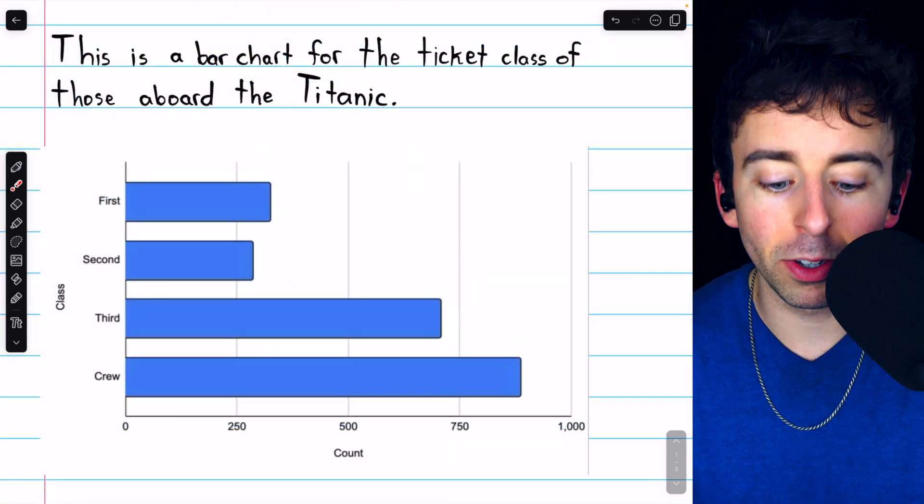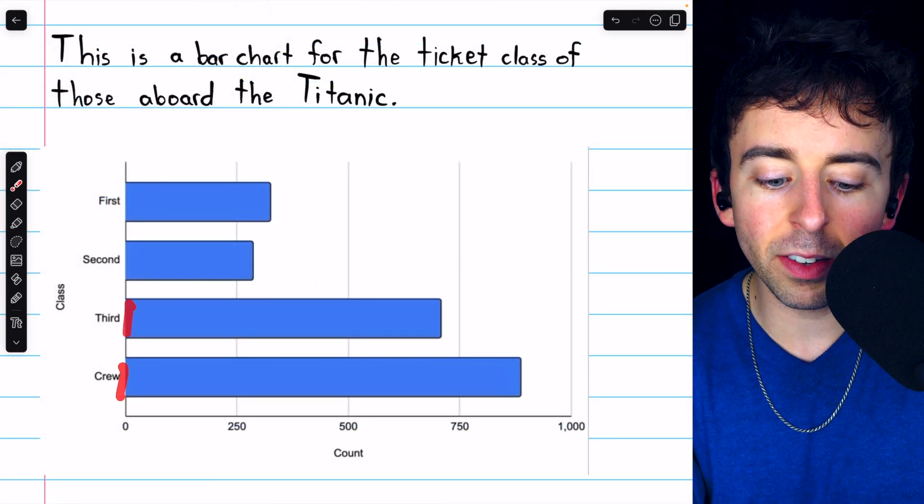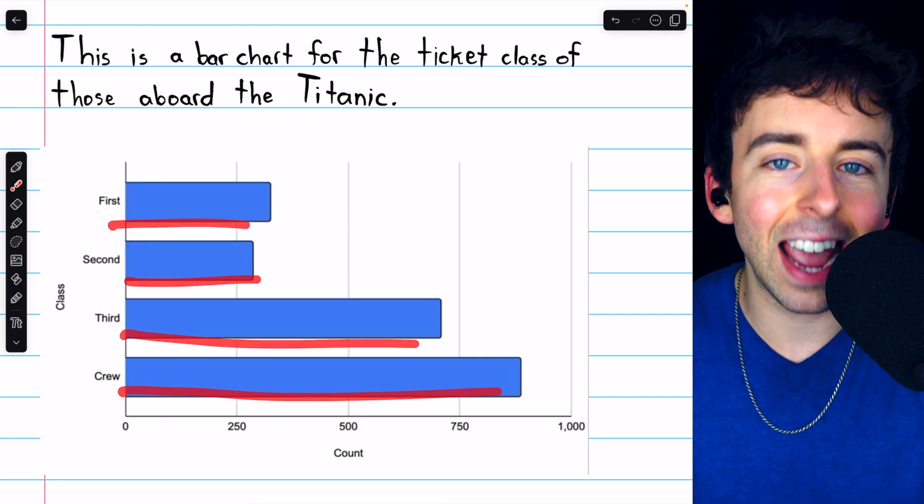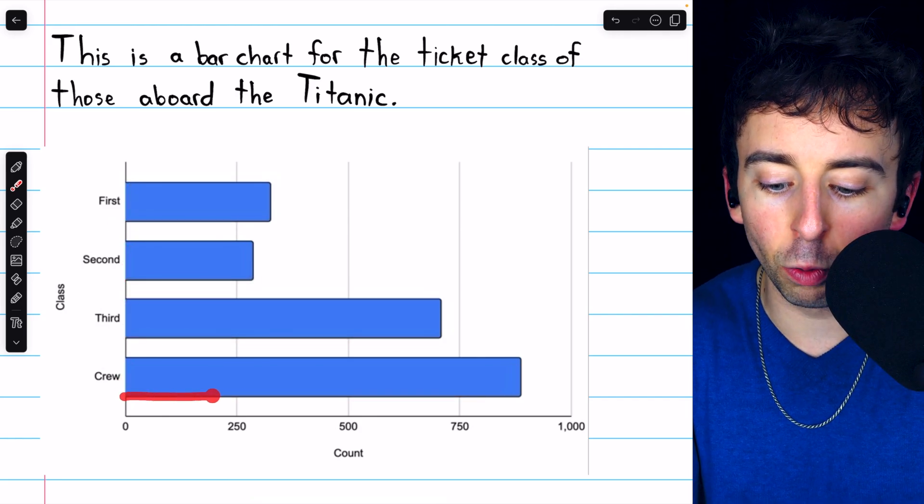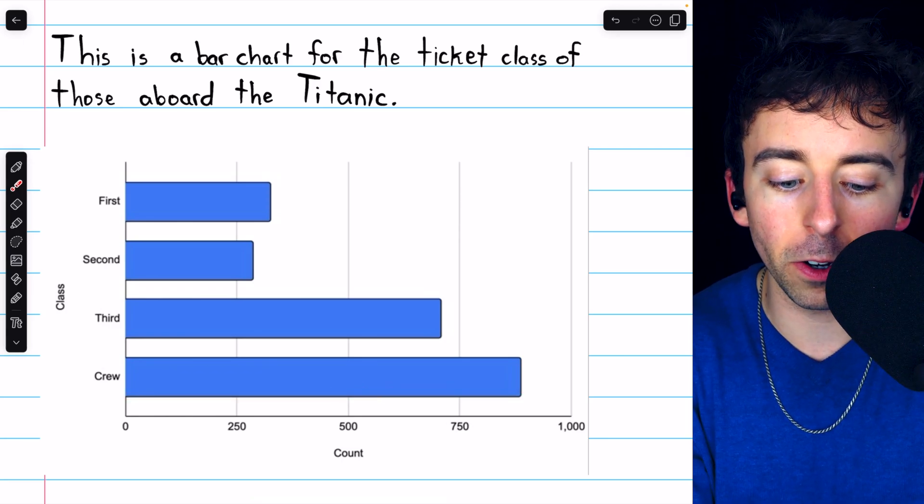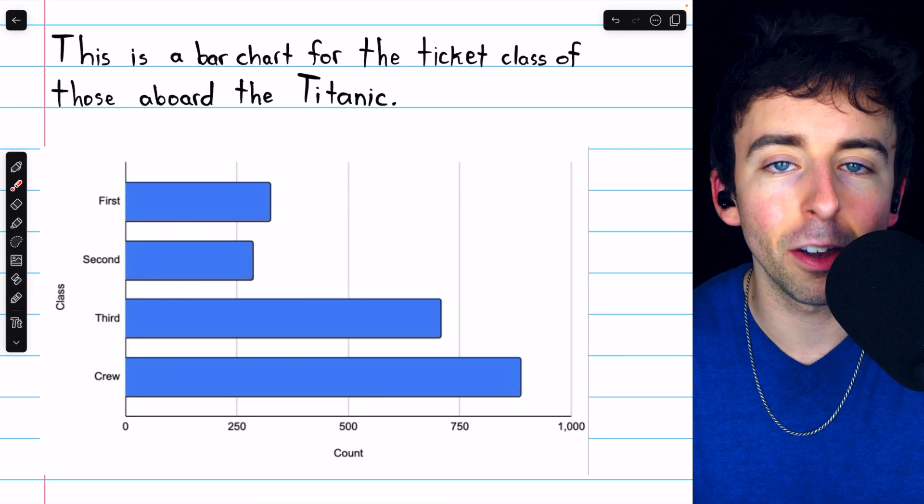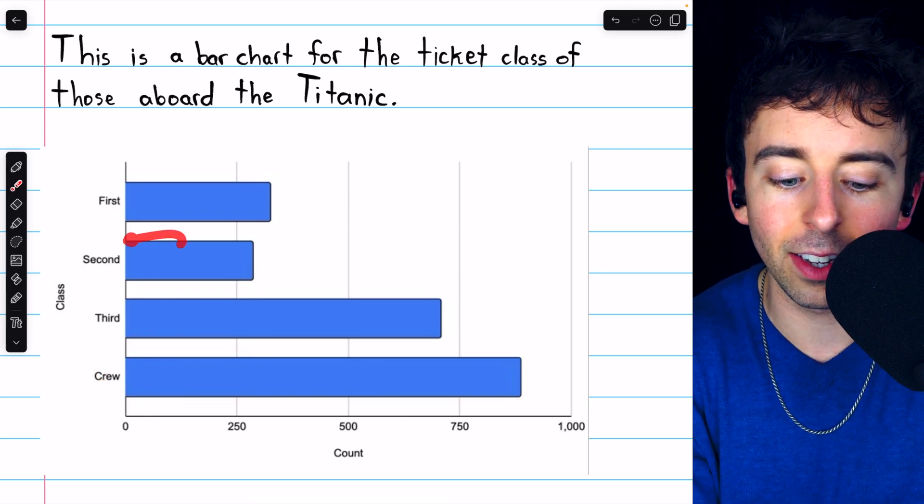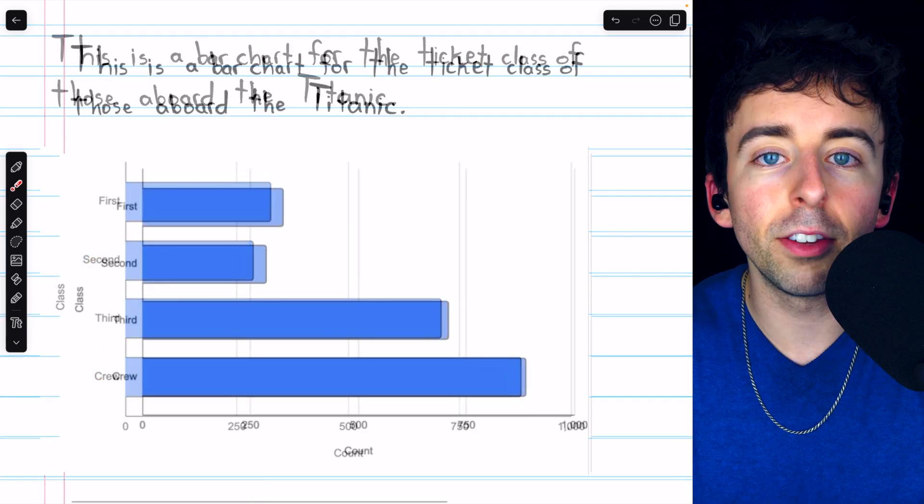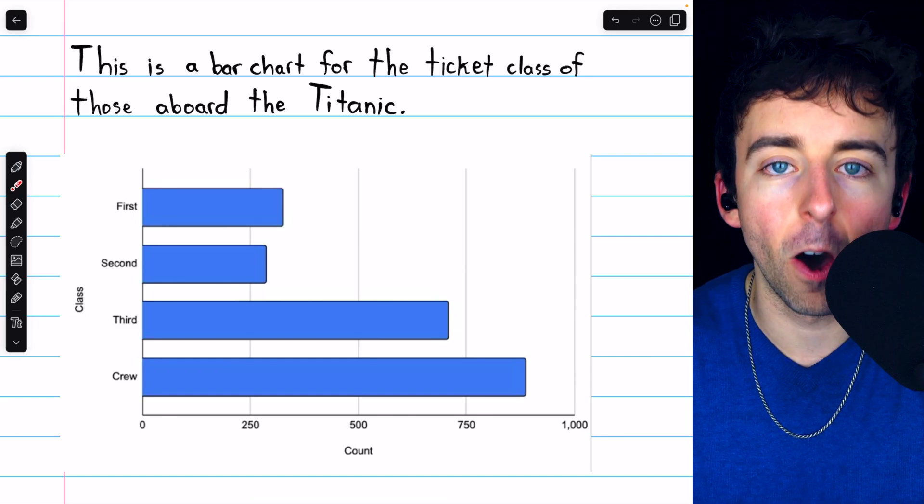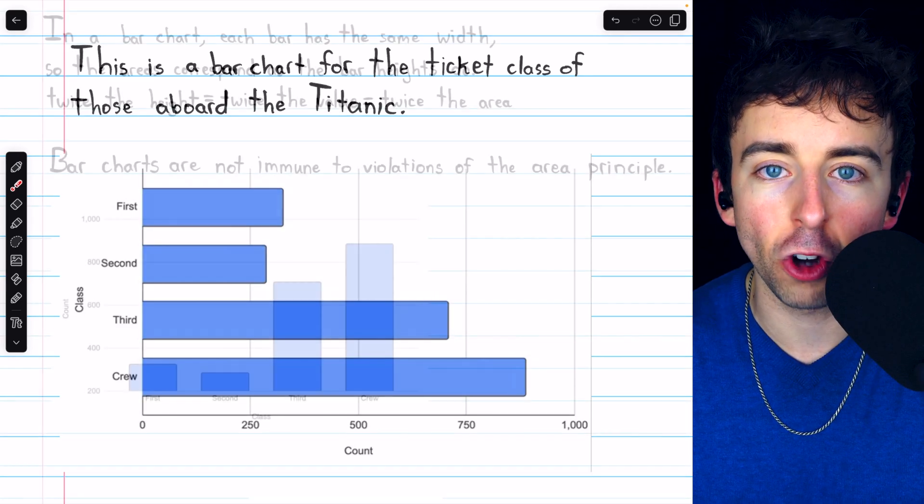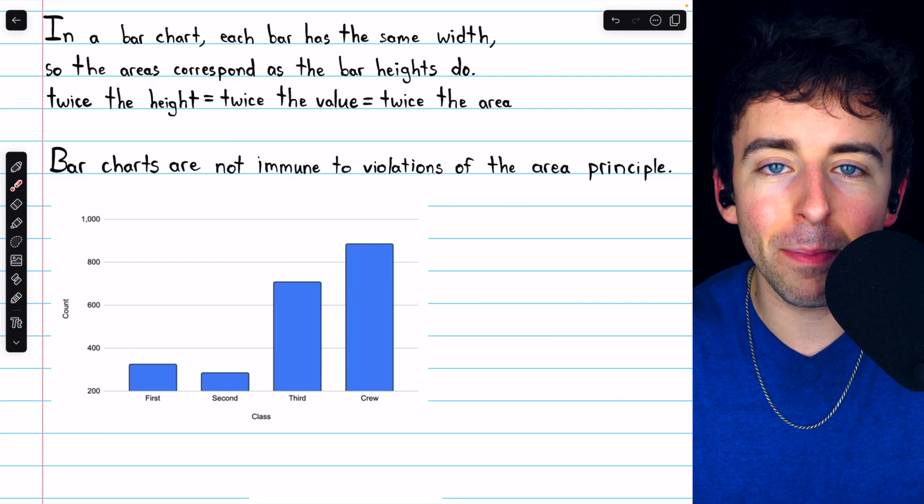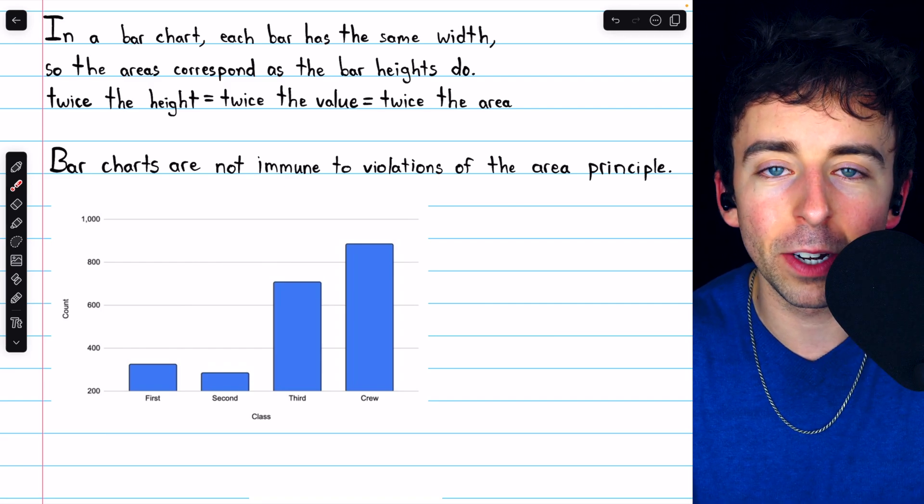We see that up in our original bar chart. Again, all the widths of these bars are the same, so it's only the heights which will really impact the areas. And since the crew bar is three times longer than the second class bar, the area of the crew bar is three times that of the second class bar. This makes an accurate impression on the reader, and that makes it a good chart. So when you're making a bar chart, use the bars, the rectangles. That makes an accurate impression on the reader.